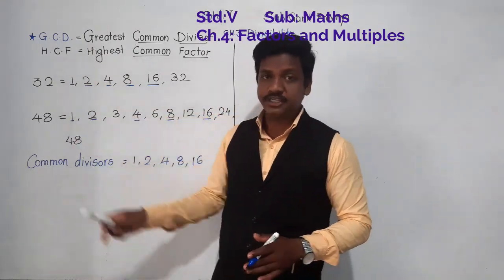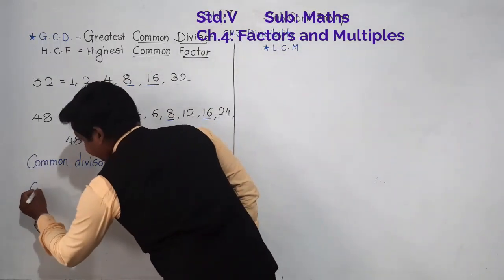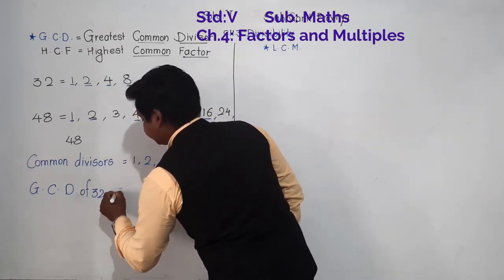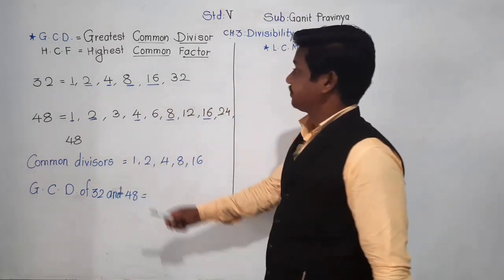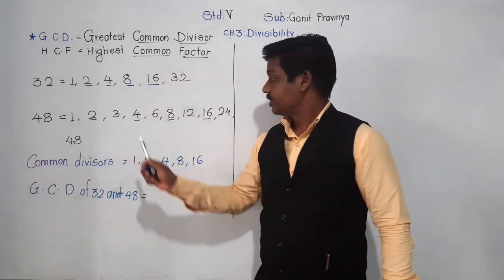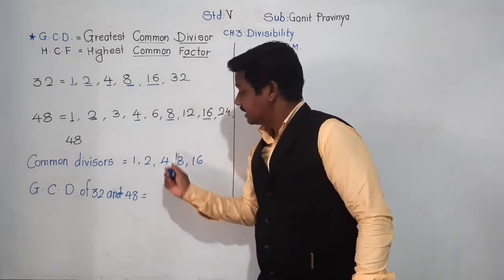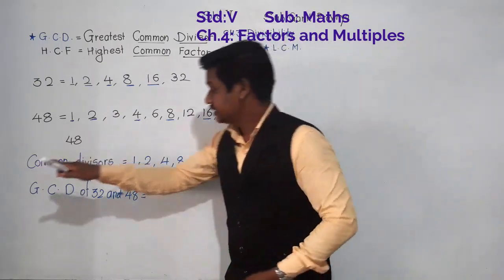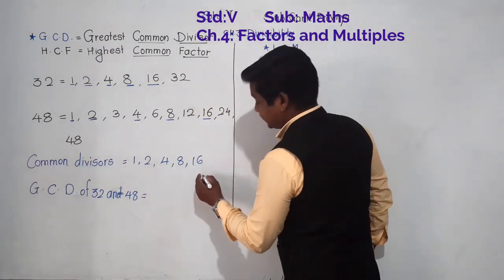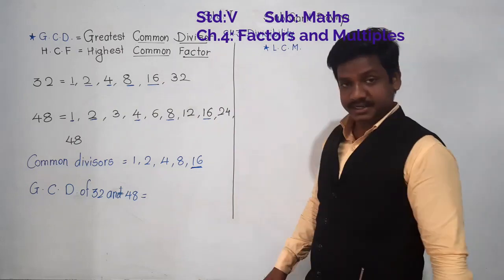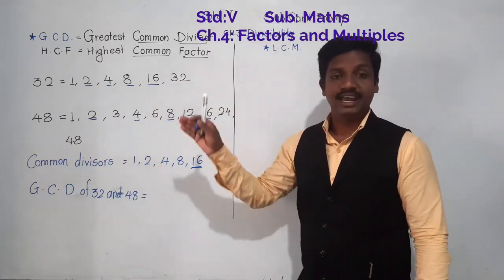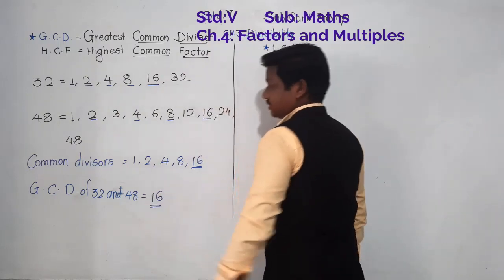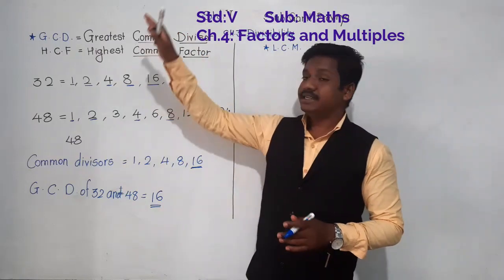These are the divisors of 32 as well as 48. Now, GCD means greatest common divisor. We first found divisors, then we found common divisors. In these common divisors, which is the greatest — the biggest, highest? It is 16. So 16 is the GCD or HCF of 32 and 48.